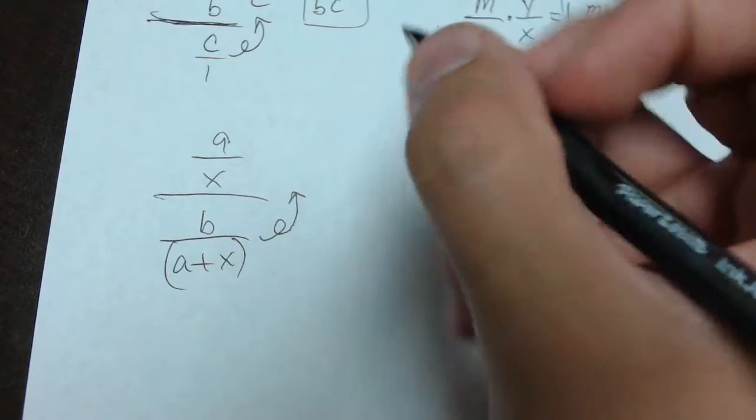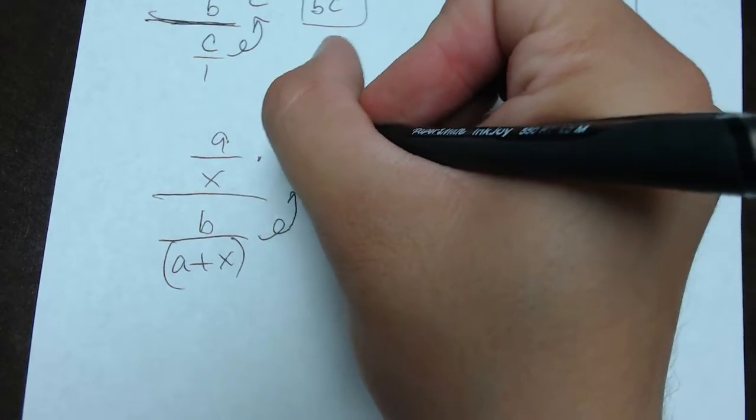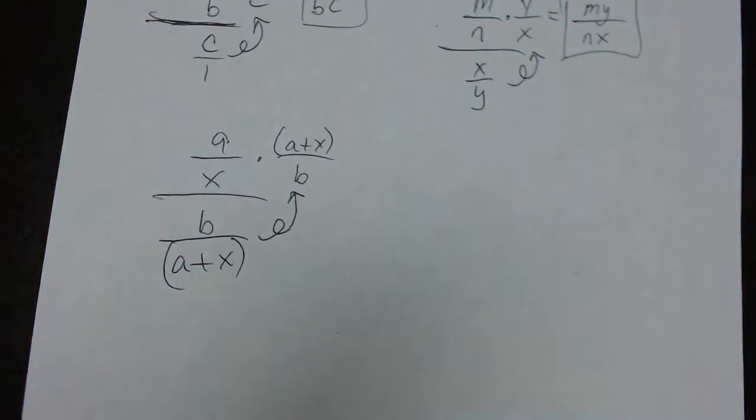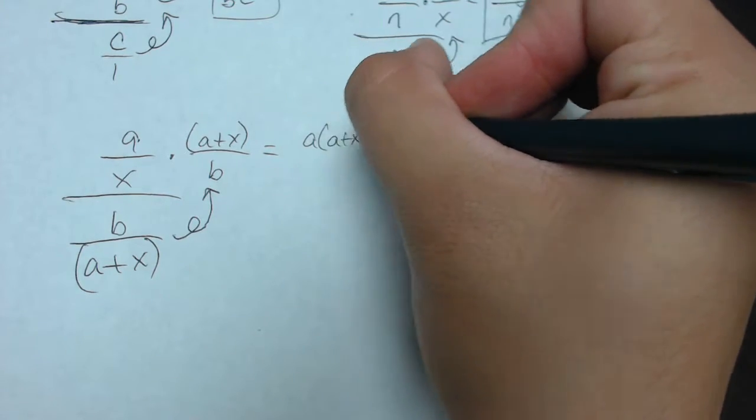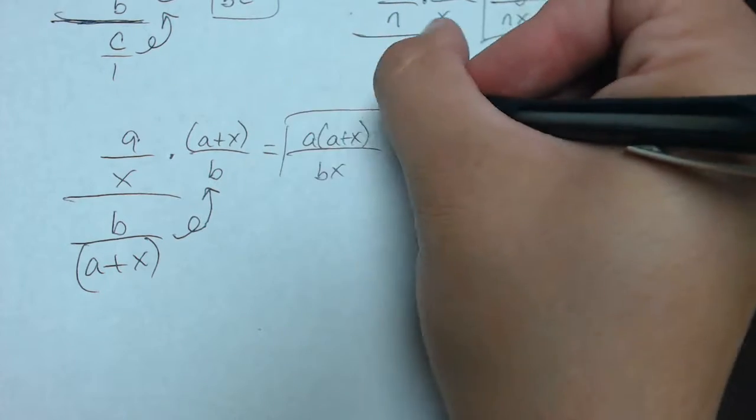So, I'll take this fraction, invert, and bring it to the top. And so what I have is A times A plus X over B. So, then when I multiply that, I just get A times parentheses A plus X over B times X. And that's my answer.